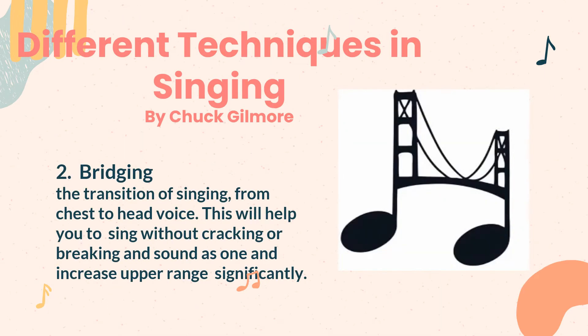Second is bridging — the transition of singing from chest to head voice. This will help you to sing without cracking or breaking, and sound as one, and increase upper range significantly. The purpose of the bridge is to make a gradual pull to the next section of the song without any clashes. It can have any texture as well, and it can let the listener know that something is about to change in a song. Keep in mind that the bridge is only made to link two sections together.